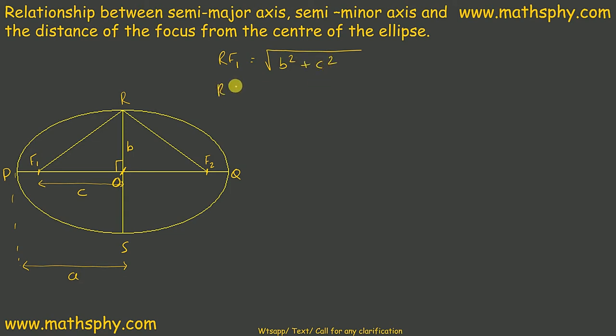Same is with RF2, B square plus C square. Now let's quickly write here. This is my B square plus C square root. Same is here.